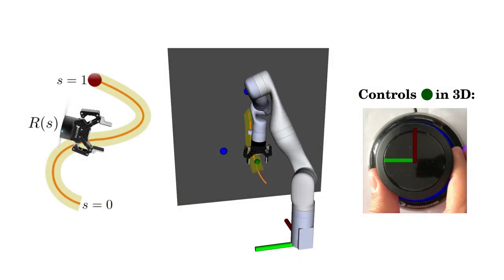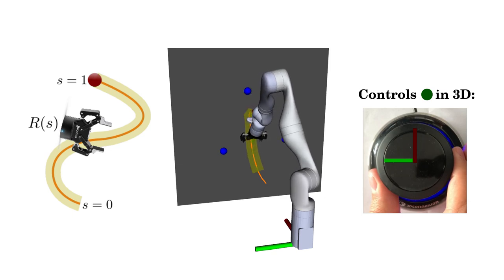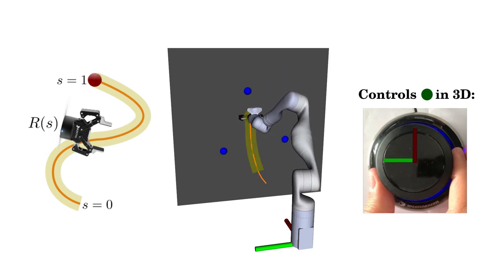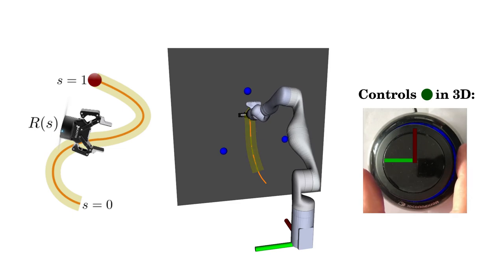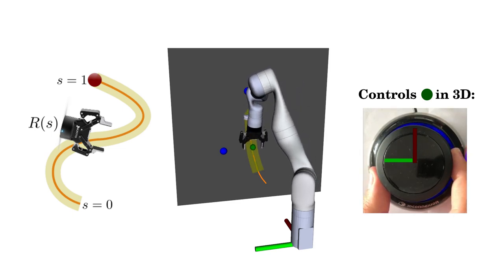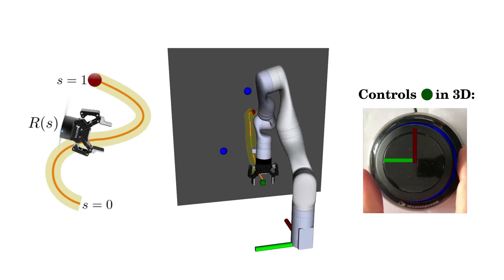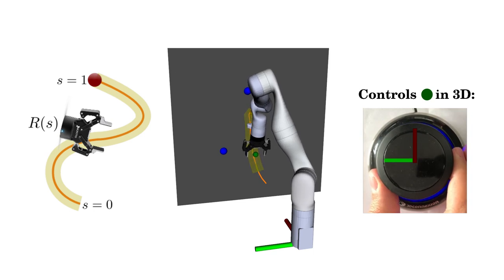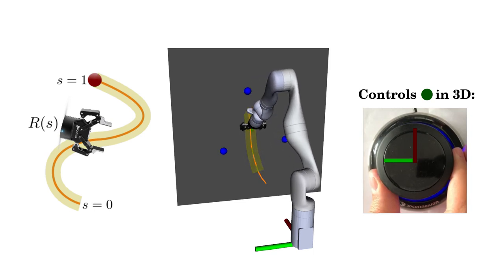Here you can see how a human operator controls a seven degrees of freedom robot arm with assistance from the reactive virtual guidance fixture. The orientation of the end effector is autonomously shifted from an initial to a final orientation. This is achieved by setting the orientation as a function of a normalized path variable s, which indicates the progress of the end effector along the tube.